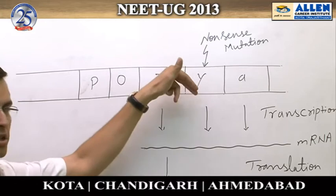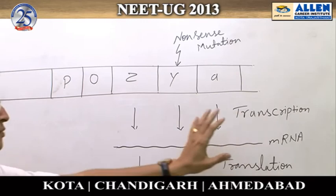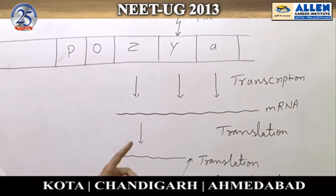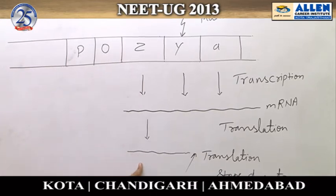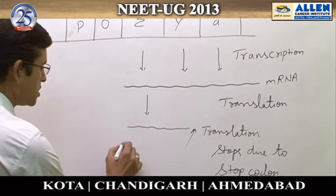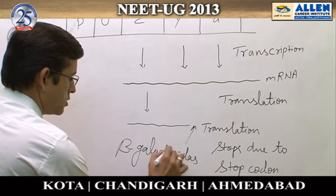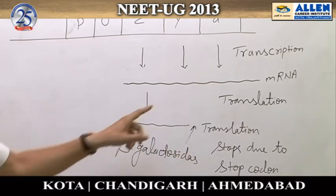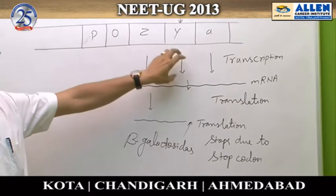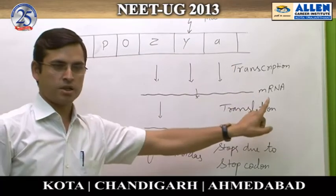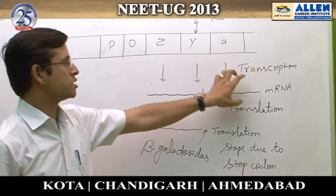When transcription occurs, it produces a complete polycistronic mRNA. But when translation takes place, due to the nonsense mutation, lac Z will undergo translation properly and produce beta-galactosidase enzyme. However, further translation stops because of the stop codon, so permease will not form — lac Y produces permease and lac A produces transacetylase.